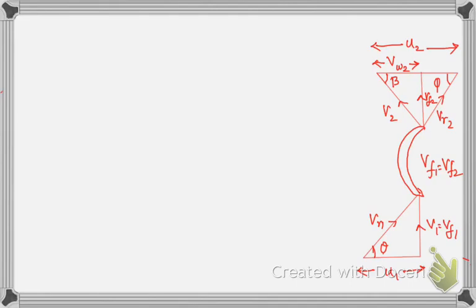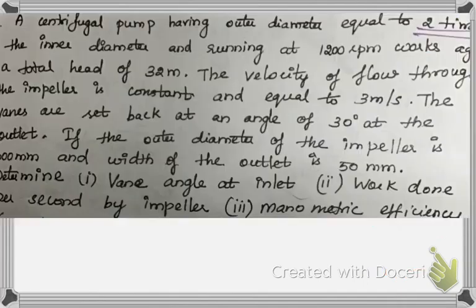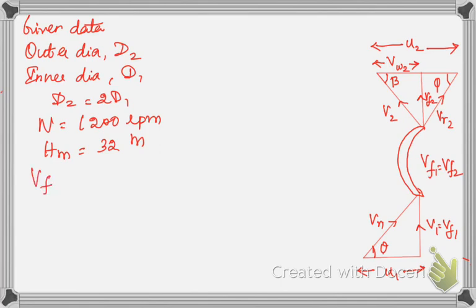Now let's write the given data. First, a centrifugal pump has an outer diameter equal to two times the inner diameter: d2 = 2 × d1. It is running at N = 1200 rpm. It works against a total head Hm = 32 meters. The velocity of flow through the impeller is constant and equal to 3 m/s, so vf1 = vf2 = 3 m/s.